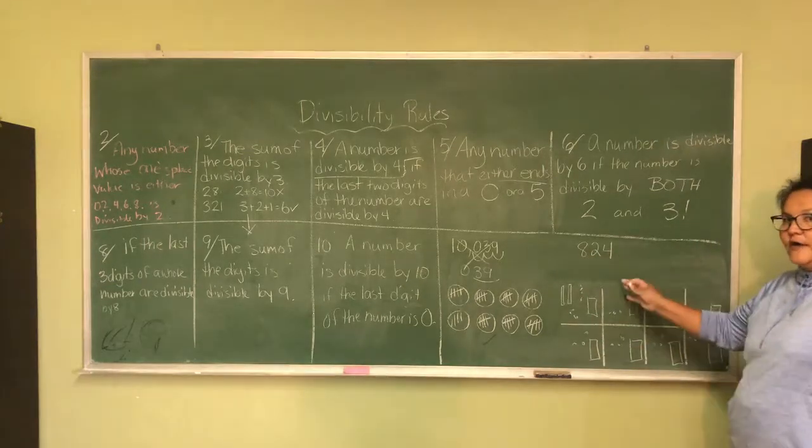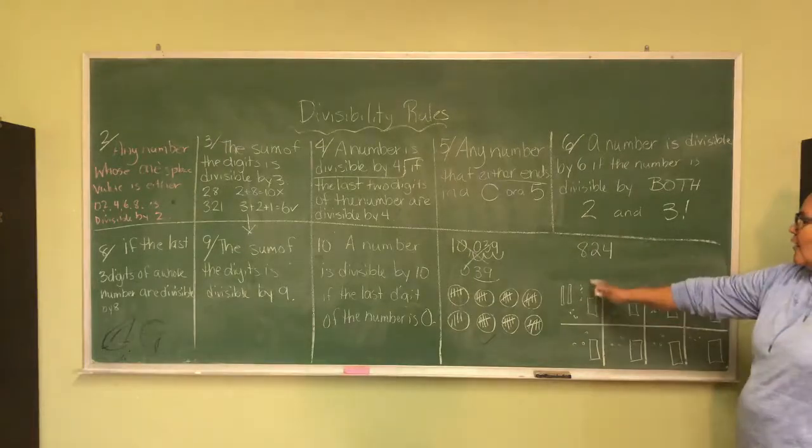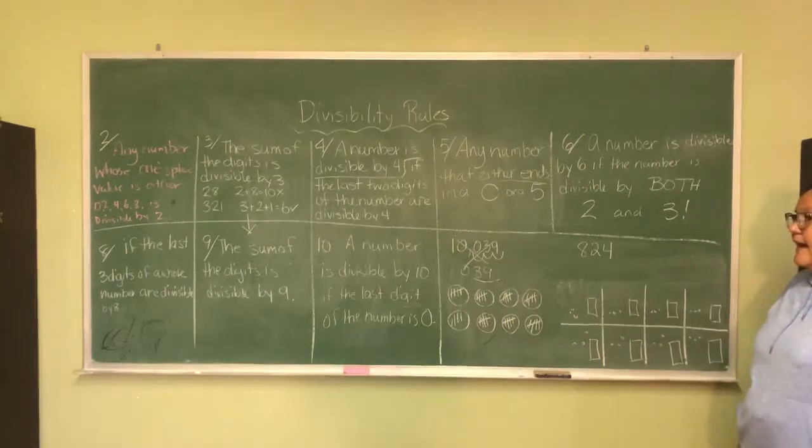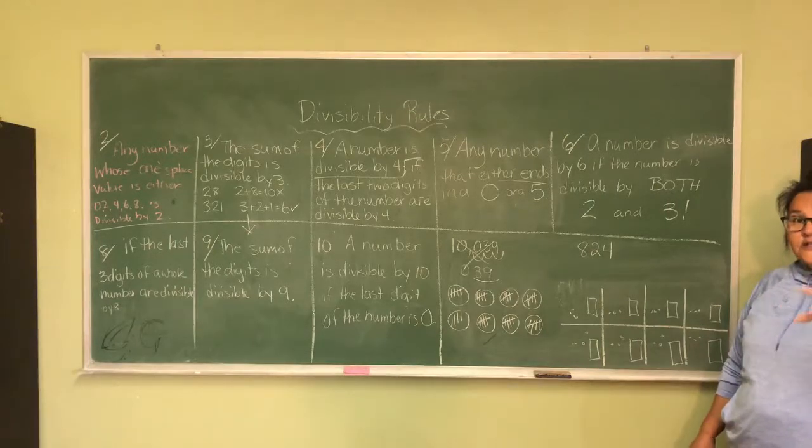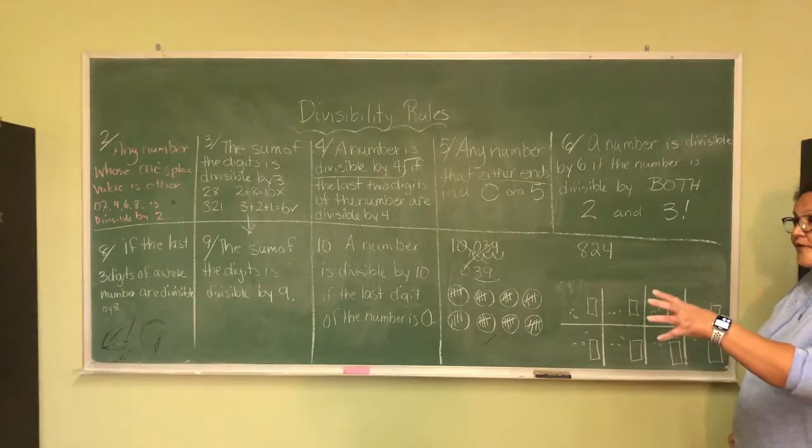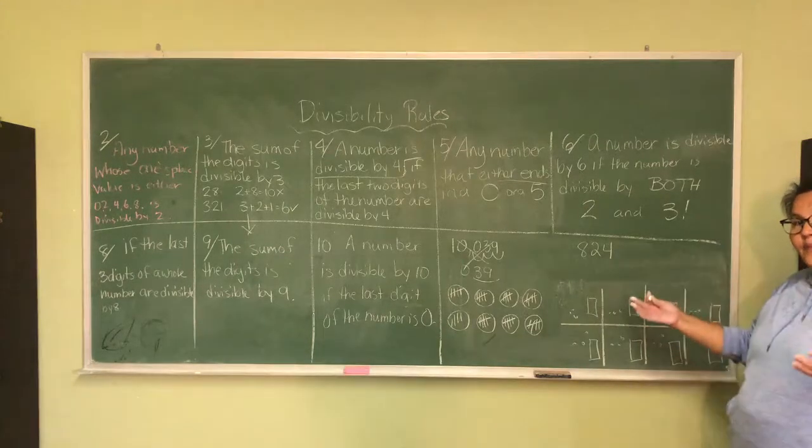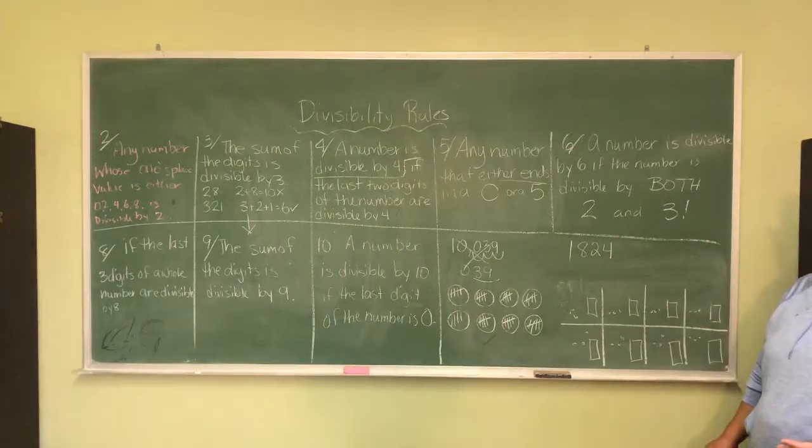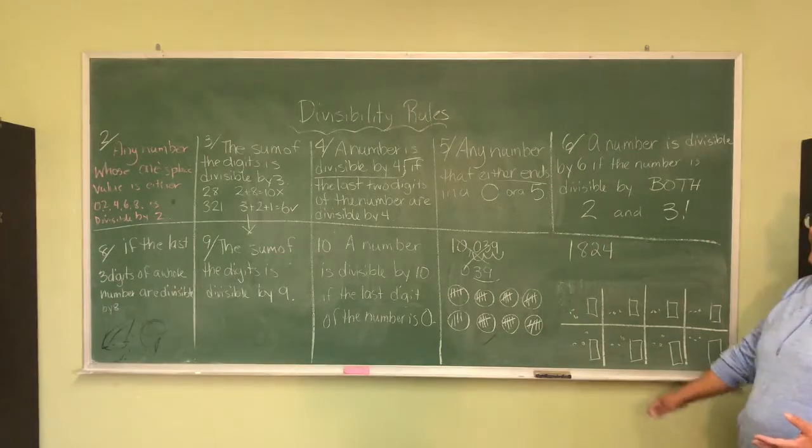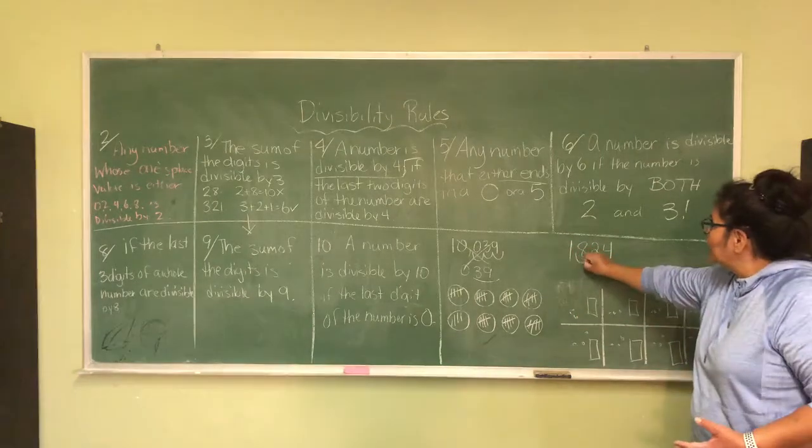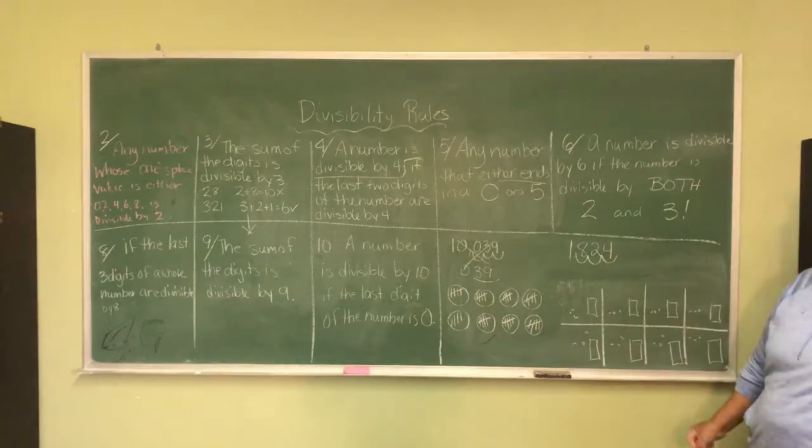So, yes, 824 is divisible by 8 according to that rule. Now, the most interesting thing about it, it says if the last three digits of the whole number are divisible by 8, then that means the other number. So, if I put 1,824, that it is still divisible by 8 because the last three digits are divisible by 8.